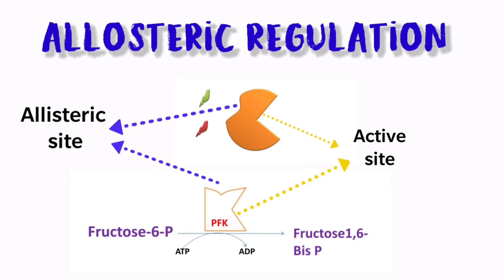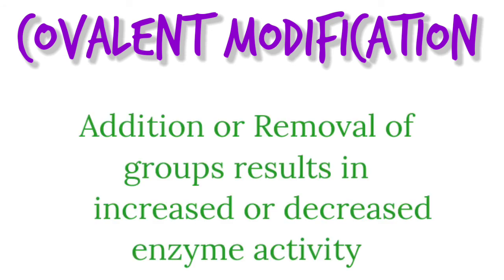The second type of short-term regulation is covalent modification. Covalent modification is the addition or removal of chemical groups, which results in increased or decreased enzyme activity. When you add a group or remove a group, the enzyme activity may be increased or decreased. This addition and removal of such groups is called covalent modification.